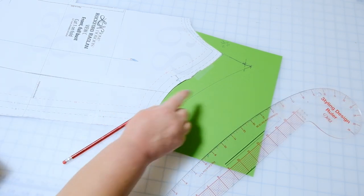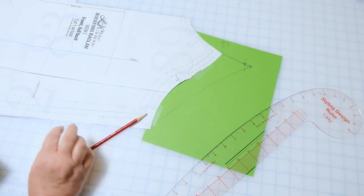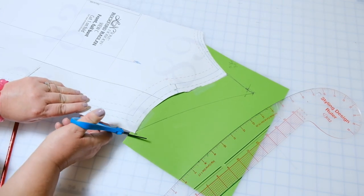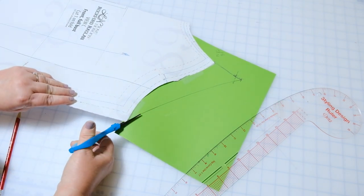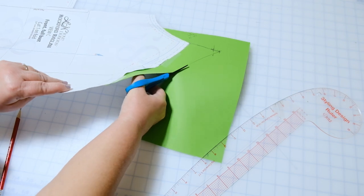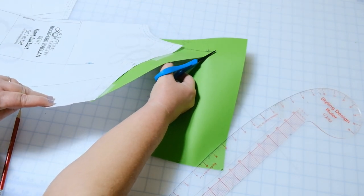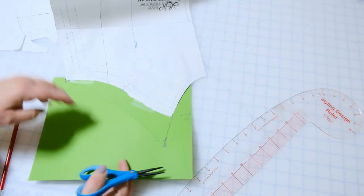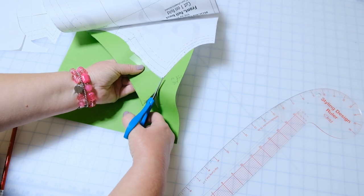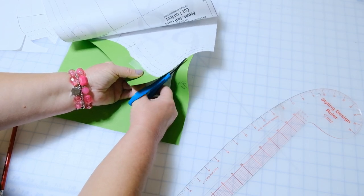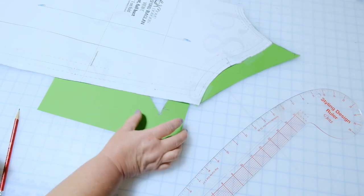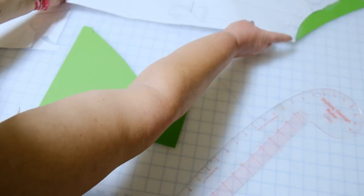So right here is where your seam is going to go. So then I'm just going to go ahead and cut that out and I will have the front underneath layer or the only layer if you don't choose to do view C. I'm going to just cut it along that curve and create my new neckline by cutting it. All right, so this is your new front piece. So we're going to put that aside and we're going to do the back.